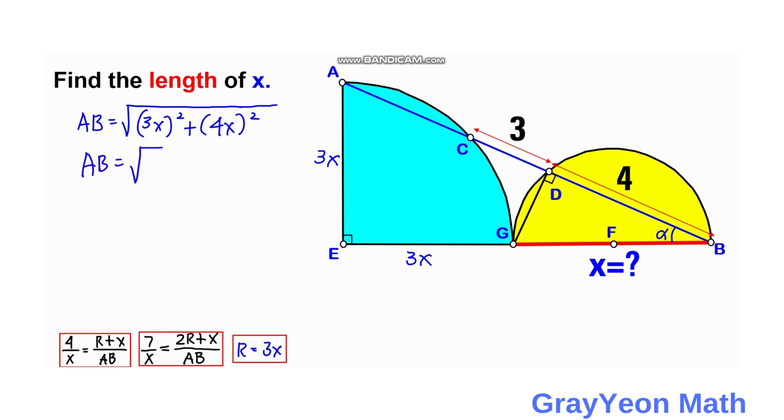So AB is equal to 9X squared plus 16X squared. This AB is equal to 25X squared. If you get the square root of this 25X squared, this will be AB equals 5X.